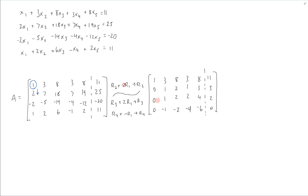Now we've created zeros below the first pivot position. We see our next pivot position as the first non-zero entry in the second row, and we're going to use that to create zeros below it. The row operations are row 3 plus negative row 2 to replace row 3, and row 4 plus row 2 to replace row 4, giving us this matrix.